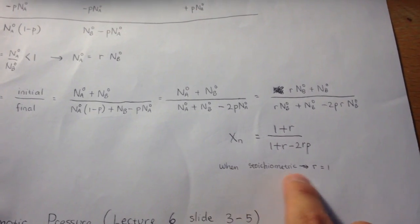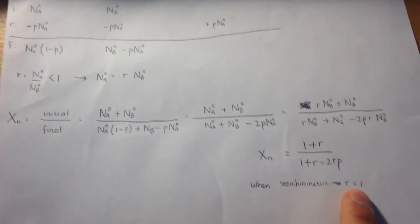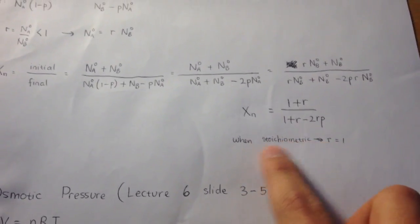So when stoichiometric, R is 1, and that's just the definition.